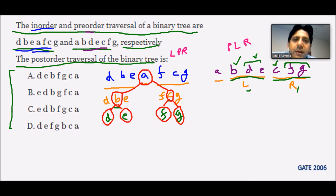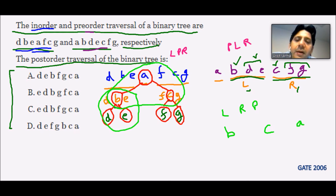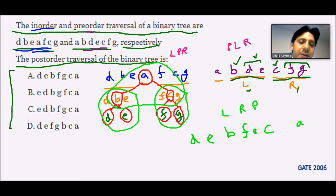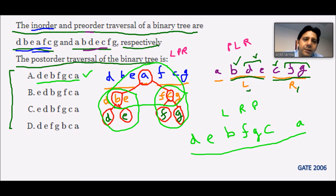Now we find the post-order for this tree. Post-order means left, then right, then parent. For the full tree: B C A. For B's subtree: D E B. For C's subtree: F G C. So the complete post-order sequence is D E B F G C A, which matches option A — the correct answer.